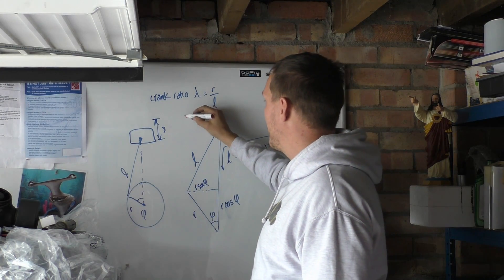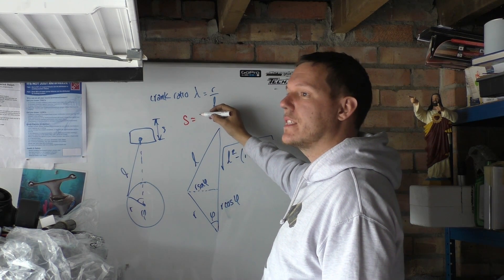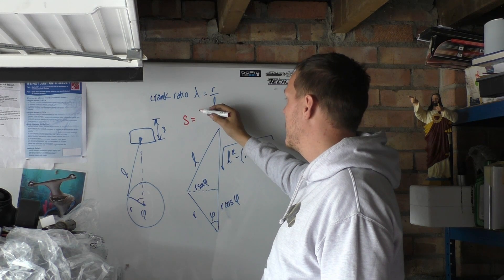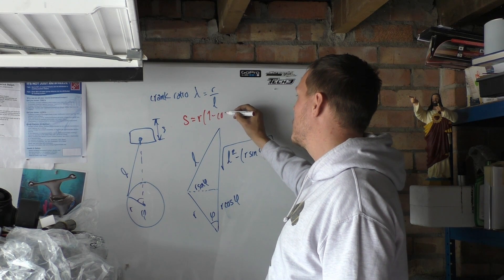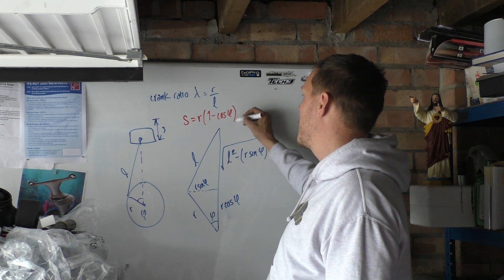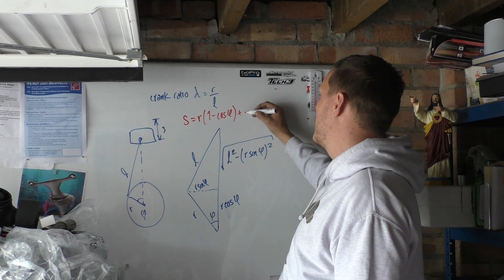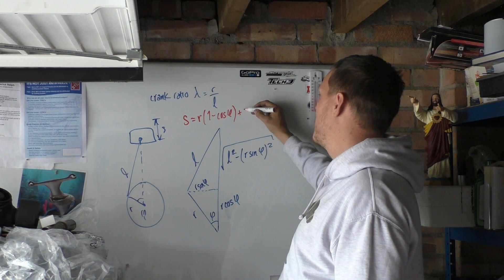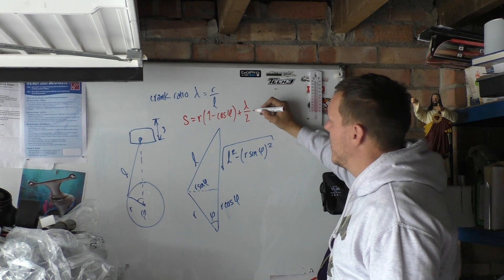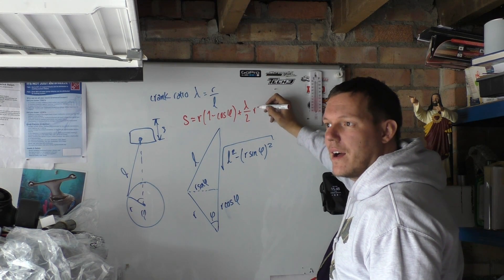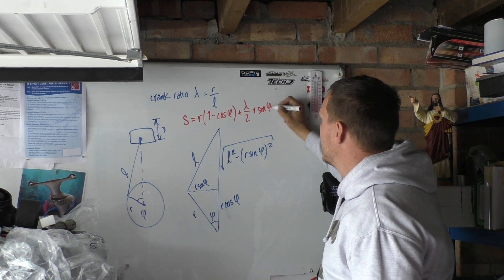Once you've got this, you have S equals R times one minus cosine phi, plus your lambda over two - because that's our ratio - and then it'll be R sine squared. So once you put all this together - I love mathematics.